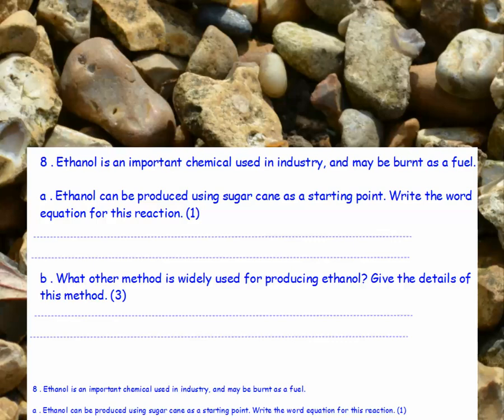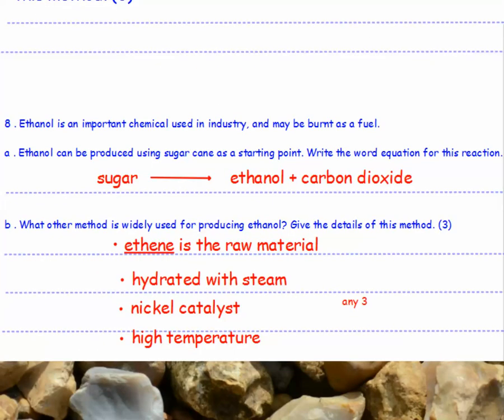Ethanol is an important chemical used in industry and it may be burnt as fuel. Part A: ethanol can be produced using sugarcane as a starting point — write the word equation for this reaction. The word equation is: sugar, fermented with yeast, produces ethanol plus carbon dioxide. Part B: the other method widely used for producing ethanol is to start with ethene as the raw material. It's then hydrated with steam in the presence of a catalyst, at a high temperature.